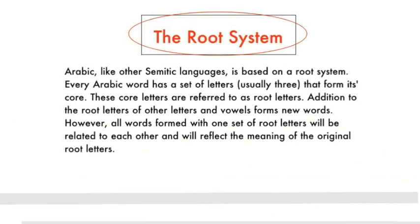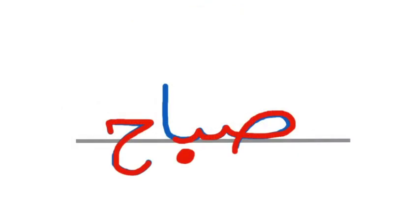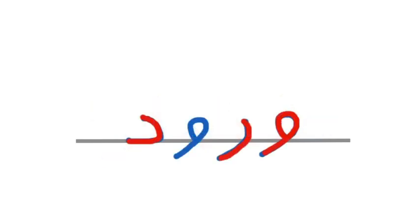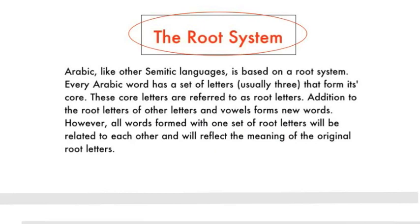The Root System. Arabic, like other Semitic languages, is based on a root system. Every Arabic word has a set of letters, usually three, that form its core. These core letters are referred to as root letters. Addition of other letters and vowels to the root letters forms new words. However, all words formed with one set of root letters will be related to each other and will reflect the meaning of the original root letters.